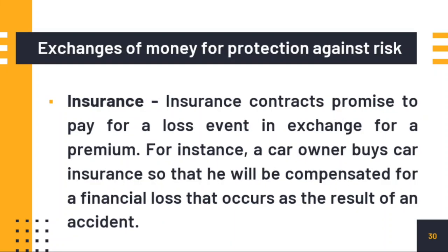The last type of financial instrument is based on the exchange of money for protection against risk — this is insurance. Insurance contracts promise to pay for a loss event in exchange for a premium. For example, a car owner buys car insurance so they will be compensated for financial loss resulting from an accident. You pay a premium and when an accident occurs, the insurance company shoulders your expenses. So financial instruments can be categorized as: loans/bonds/ABS for future interest; stocks and funds for capital gains; options and futures to offset risk; and insurance for protection against risk.